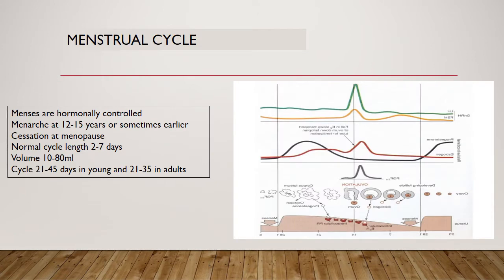Menstruation is the cyclic orderly sloughing of the uterine lining in response to the interaction of hormones produced by the hypothalamus, pituitary, and ovaries. The menstrual cycle may be divided into two main phases: the follicular or proliferative phase and the luteal or secretory phase. The length of a menstrual cycle is the number of days between the first day of menstrual bleeding of one cycle to the onset of menses of the next cycle.